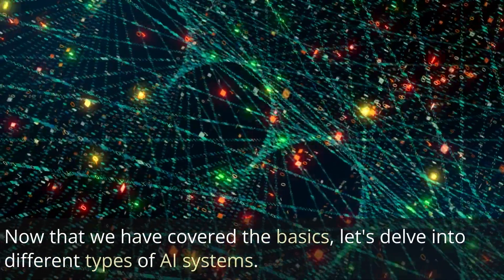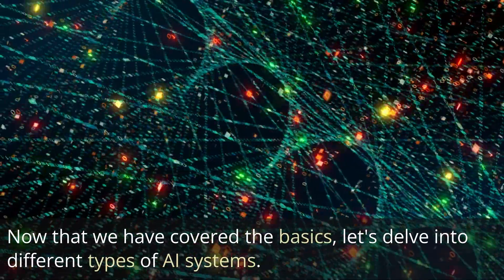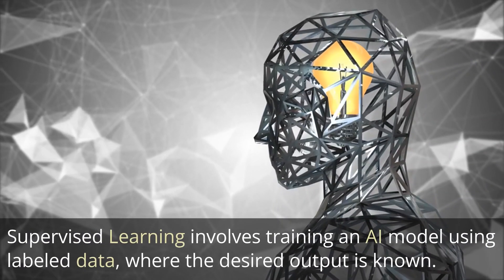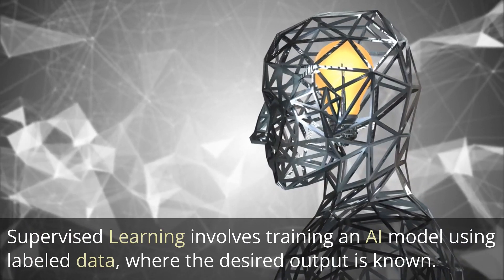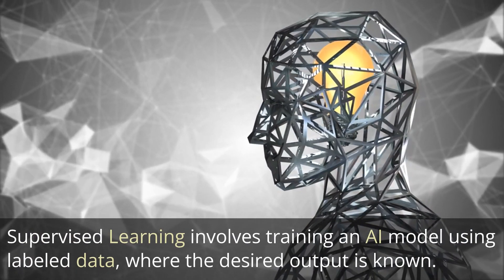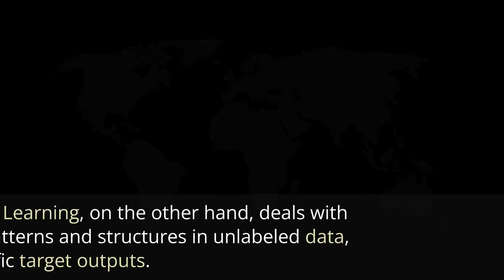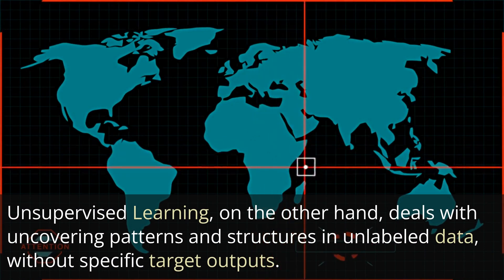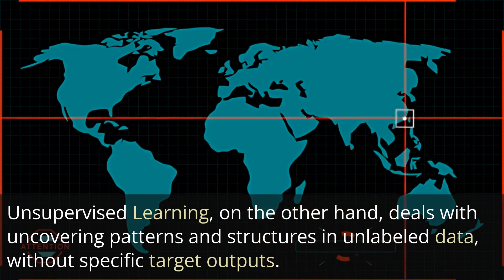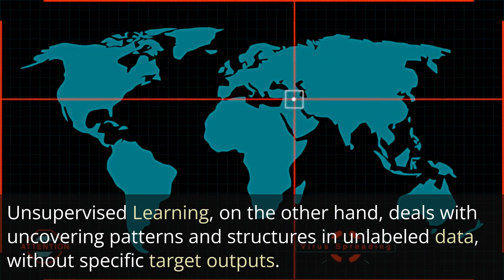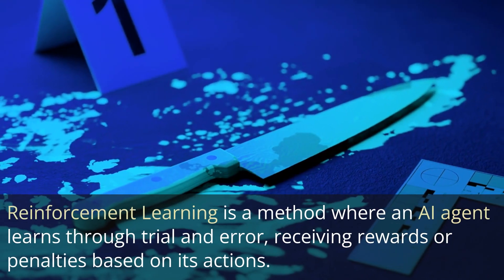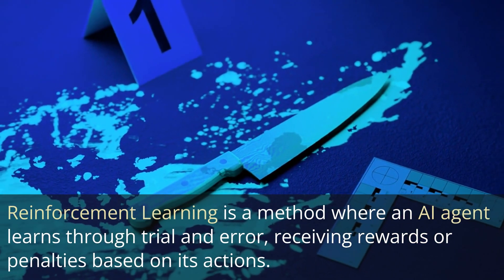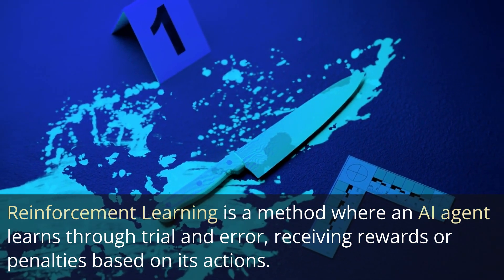Now that we have covered the basics, let's delve into different types of AI systems. Supervised learning involves training an AI model using labeled data, where the desired output is known. Unsupervised learning, on the other hand, deals with uncovering patterns and structures in unlabeled data, without specific target outputs. Reinforcement learning is a method where an AI agent learns through trial and error, receiving rewards or penalties based on its actions.